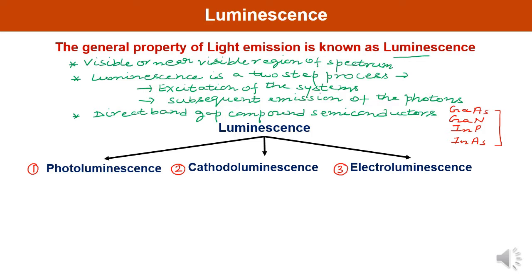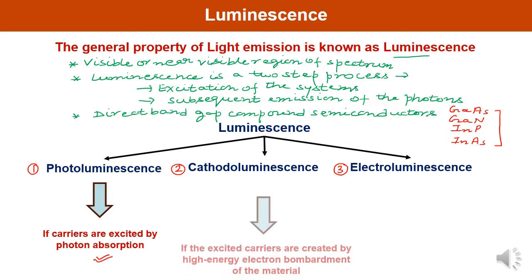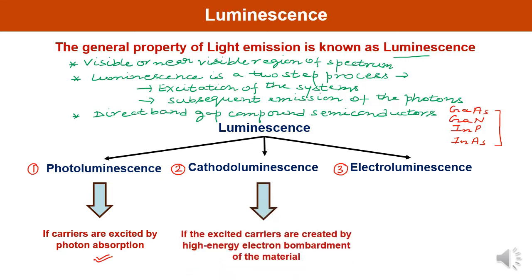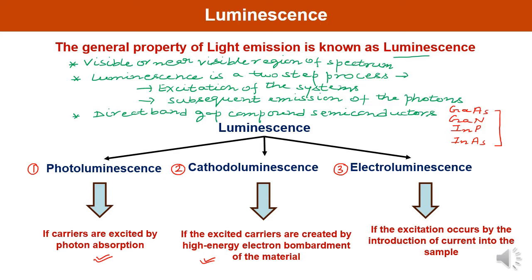Photoluminescence occurs when carriers are excited by photon absorption. If the excited carriers are created by high-energy electron bombardment of the material, then the type of luminescence is known as cathodoluminescence. And if the excitation occurs by the introduction of current into the sample, then the type of luminescence is known as electroluminescence.